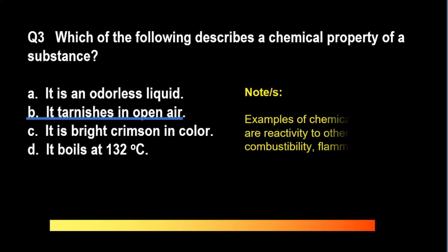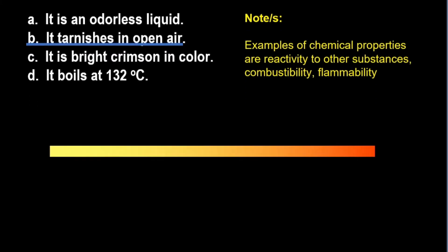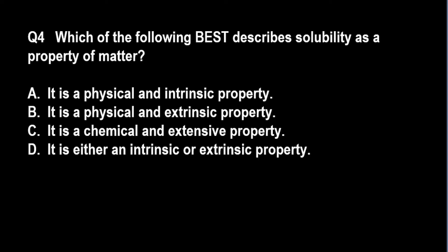Question number four: which of the following best describes solubility as a property of matter? A: it is a physical and intrinsic property, B: solubility is a physical and extrinsic property, C: it is a chemical and extensive property, and D: it is either an intrinsic or extrinsic property.